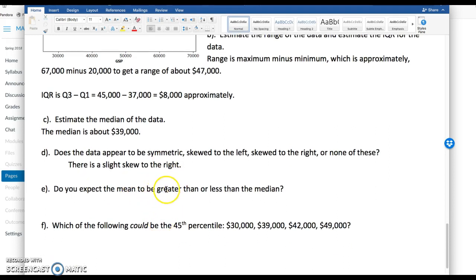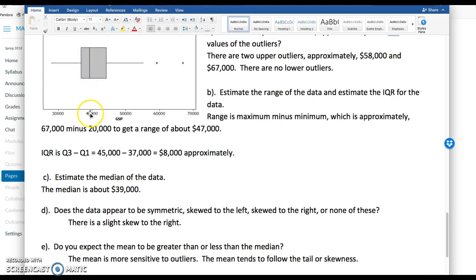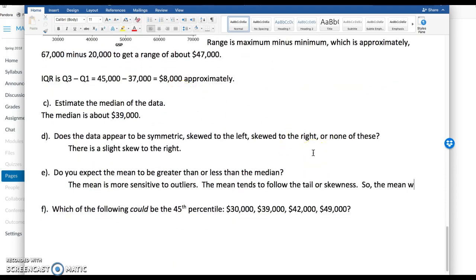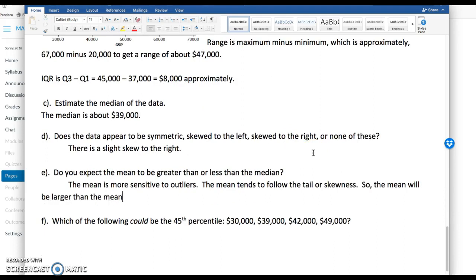So using just the skewness, do you expect the mean to be greater or less than the median? Remember the mean is more sensitive to outliers. I could also say the mean tends to follow the tail or skewness. That's one way I kind of think about that. So we know the median is right here in the middle, 39,000 or so. The mean is going to be larger. The outliers are going to pull the mean out more than the median. So the mean will be larger than the median since the data is right skewed.